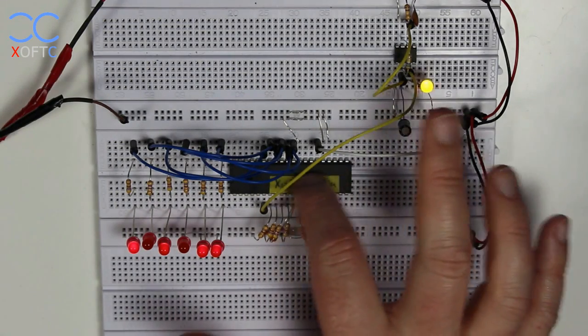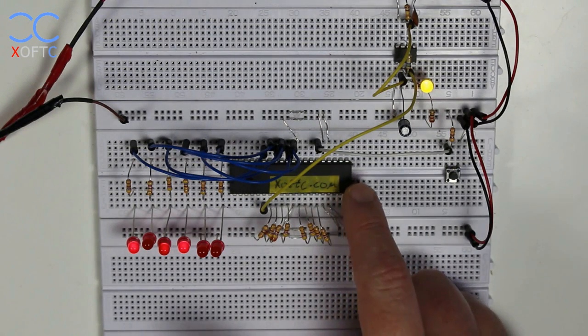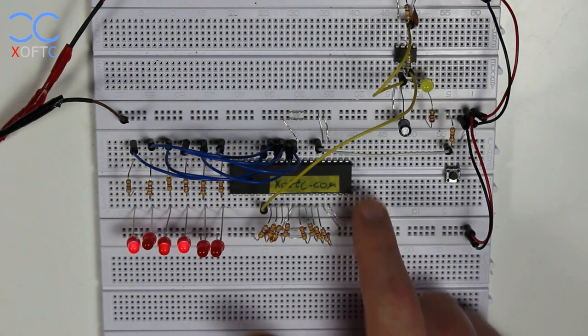We have here the Z80 CPU and it's the latest version, it's the one that can operate on a six megahertz clock.